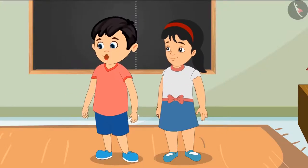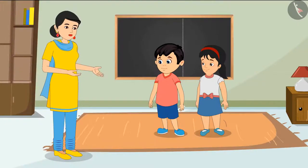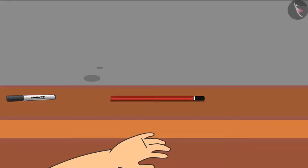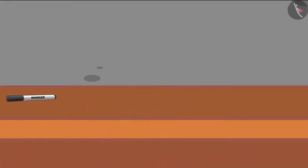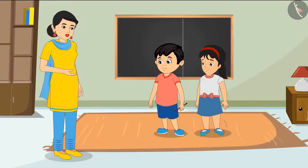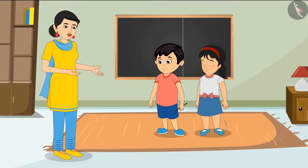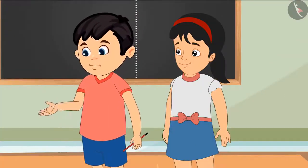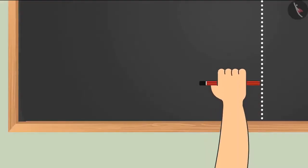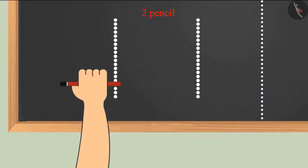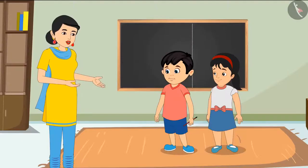The children ask how to measure. Mother tells them to bring a pencil from the table and measure the blackboard. She instructs Chotu to keep the pencil at the starting point and count how many pencils are required. Chotu begins: one pencil, two pencils, three pencils.